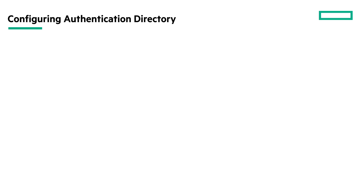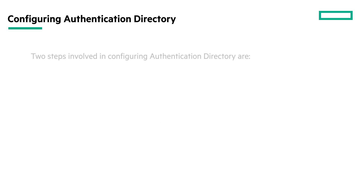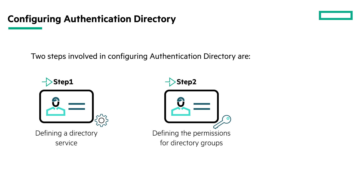HPE OneView supports two types of directory services: Microsoft Active Directory and OpenLDAP Directory Services. There are two steps involved in configuring the authentication directory. In step one, you define the directory service — configuring HPE OneView to use an external enterprise directory service for user authentication. In step two, you assign permissions to the directory users using their group membership in the directory.